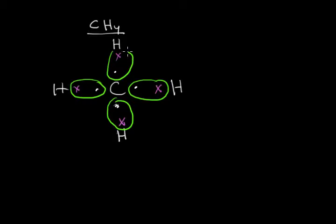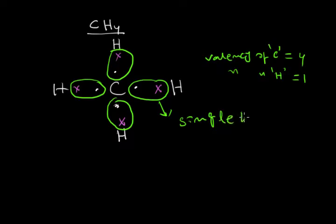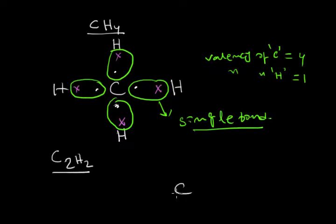Carbon forms four electron pairs with four hydrogen atoms, so the valency of carbon is four and the valency of hydrogen is one. This is the formation of methane, and this bond is called a single bond.